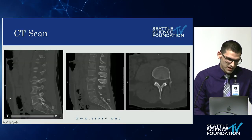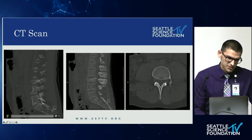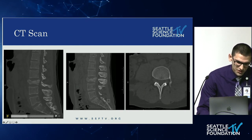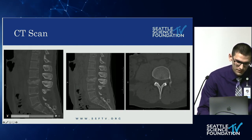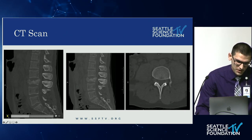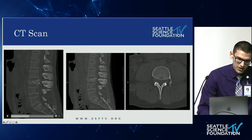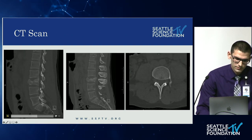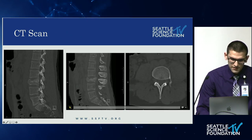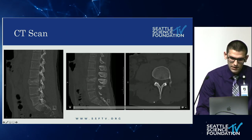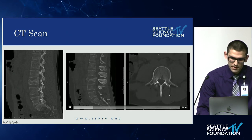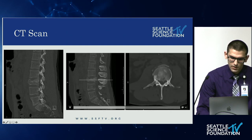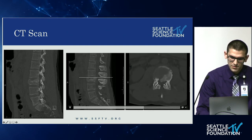Here we have a CT scan in sagittal view demonstrating an L3 burst fracture with more than 50% loss of vertebral height, and there's also some retropulsion noted — the radiologist reported approximately 8 millimeters of retropulsion. On the axial view we can also see the burst fracture at L3 and the retropulsion into the spinal canal.